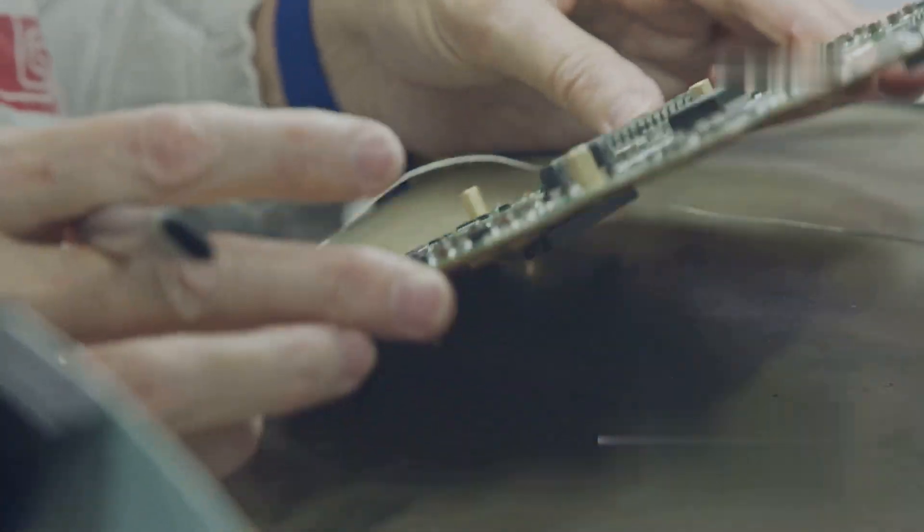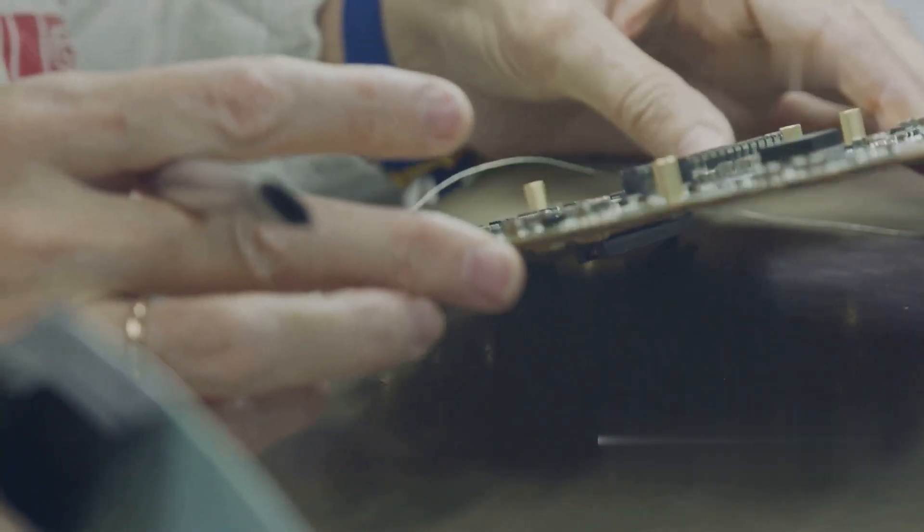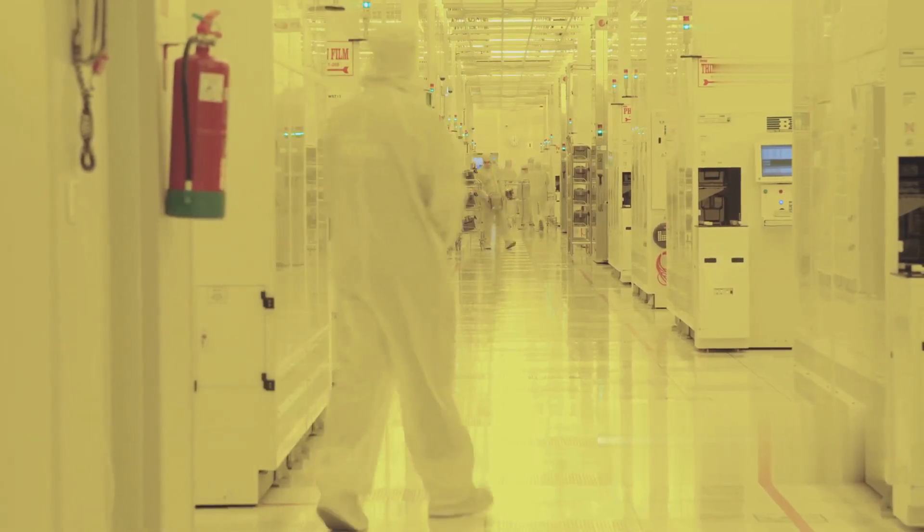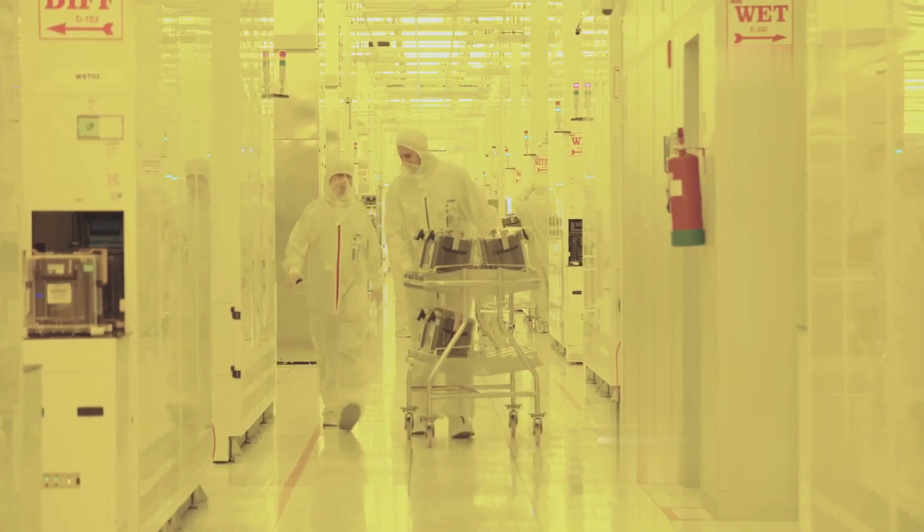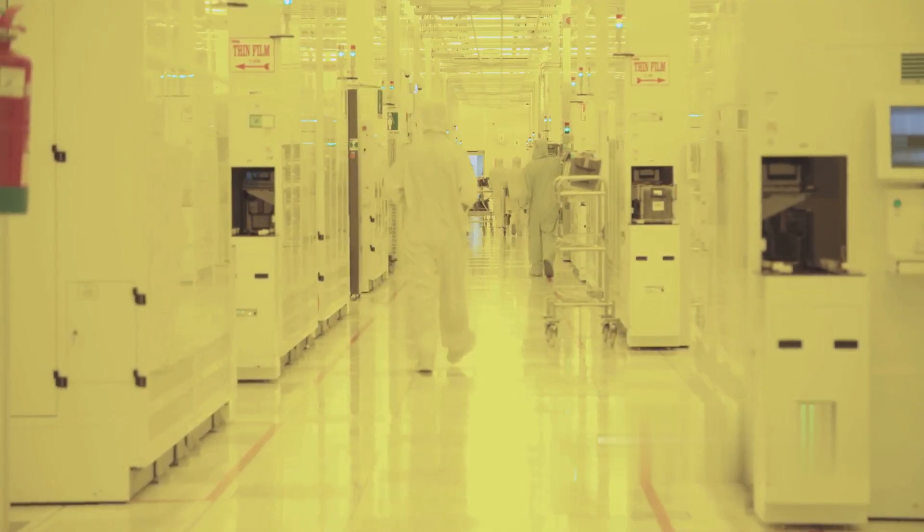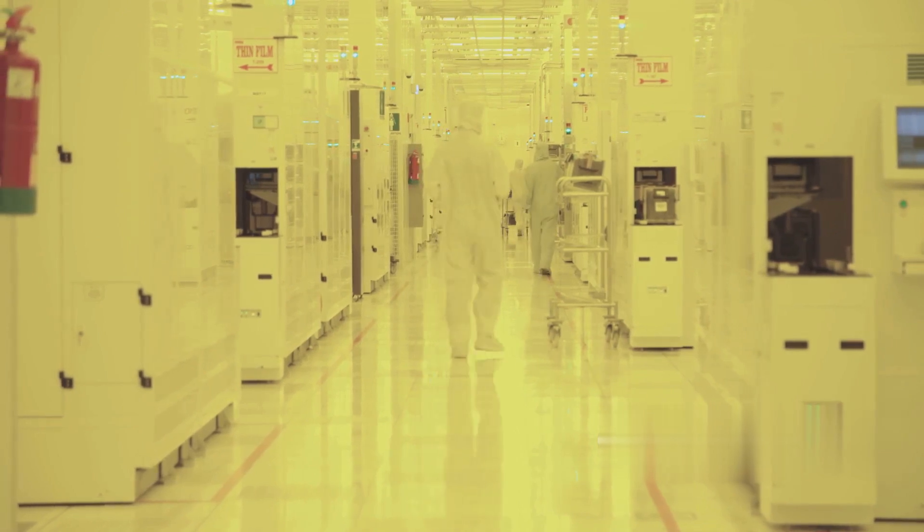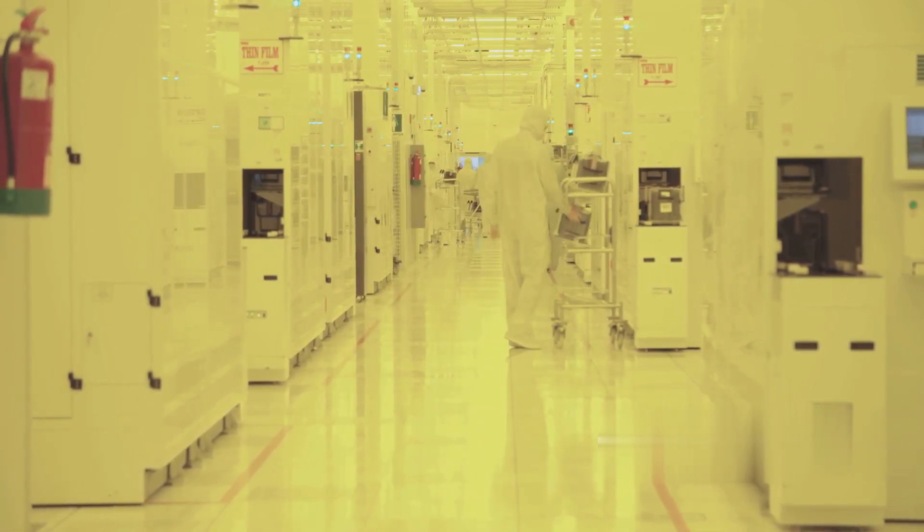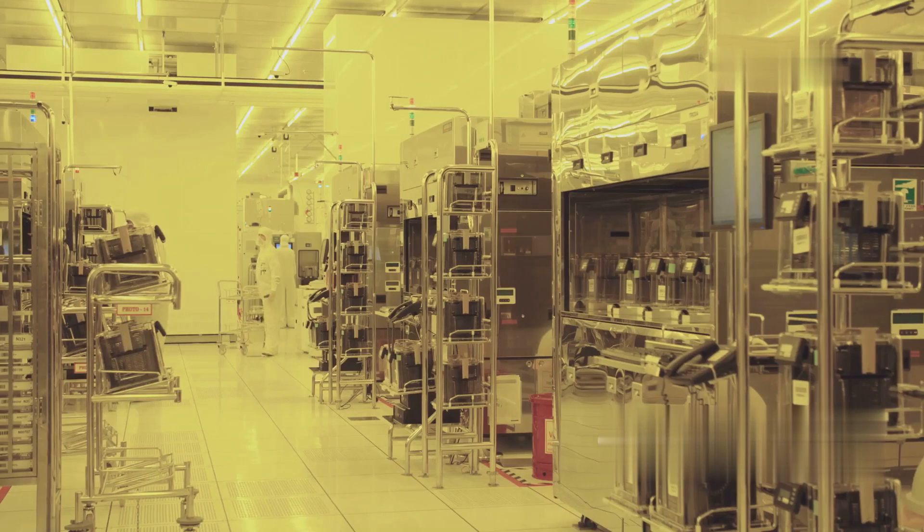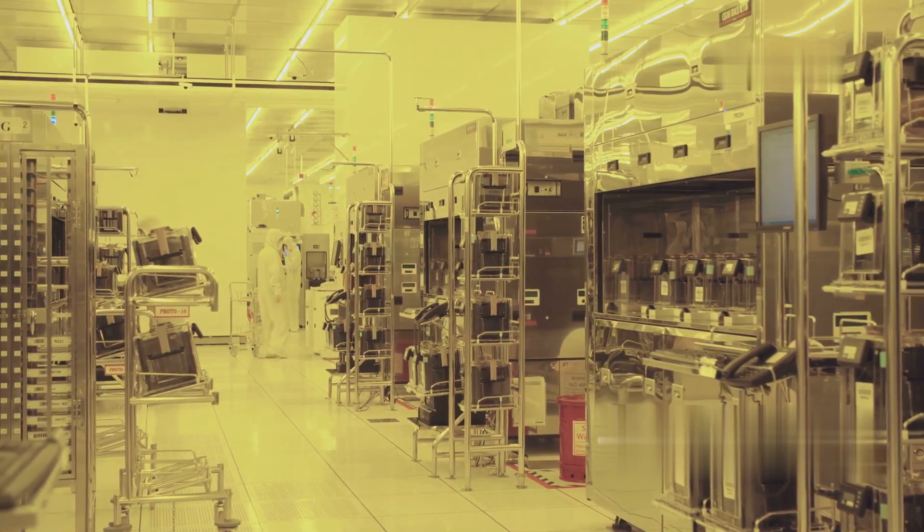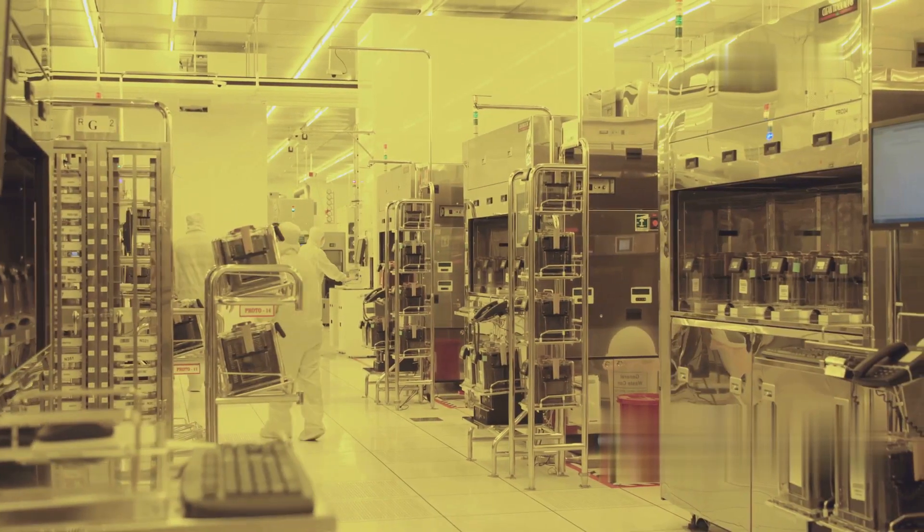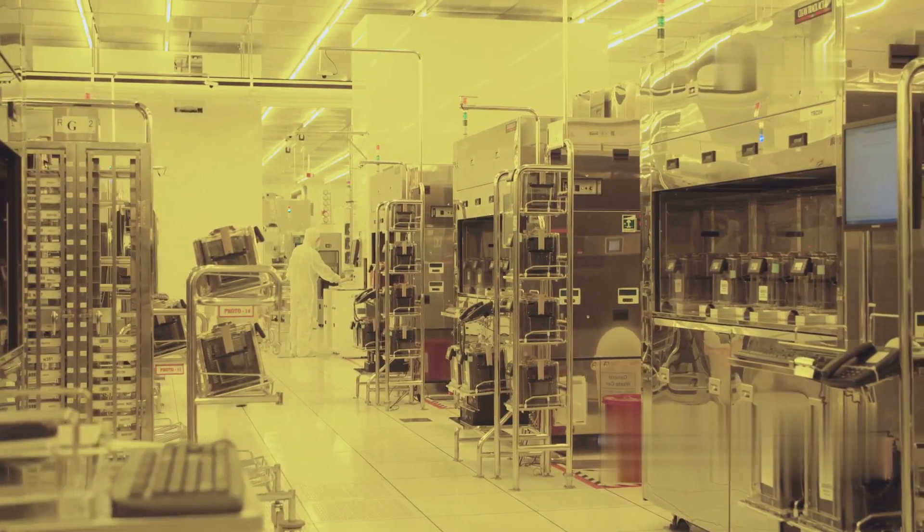Doping is the process of introducing impurities into the silicon crystal lattice to alter its electrical conductivity. Silicon, in its pure form, is a poor conductor of electricity. By adding specific impurities, engineers can create regions within the silicon that have either an excess of electrons, n-type, or a deficiency of electrons, p-type. N-type doping is achieved by introducing elements like phosphorus or arsenic, which have one more valence electron than silicon. These extra electrons are free to move within the silicon lattice, increasing its conductivity.